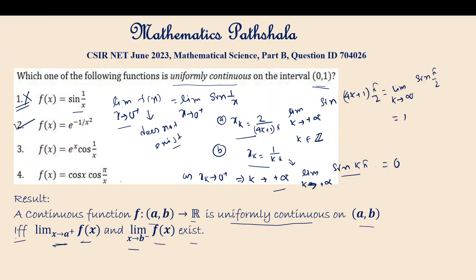Since this is a Part B problem, we don't strictly need to check options 3 and 4 — only option 2 is correct. However, we can verify: cos(1/x) is also not defined at x = 0, and cos(π/x) is also not defined at x = 0.